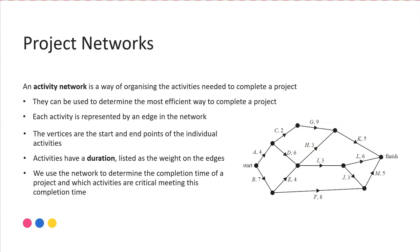We generally represent these projects as a directed network. Some of the key differences is that we label our edges as opposed to the vertices. Each of these edges in this network represent a different activity, and the number is the duration or the weight on the edge. So activity H might take three weeks.